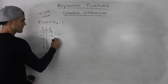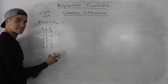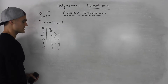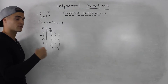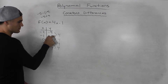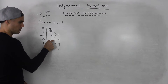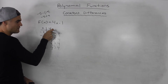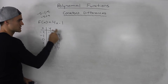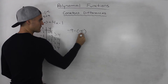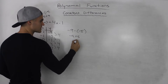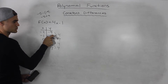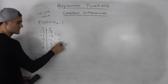Negative 1 minus negative 5 gives us 4. 3 minus negative 1 is 4, and 7 minus 3 is 4 as well. I want to reiterate — and I'll reiterate multiple times because it's a common mistake — you always take the bottom y value and subtract the top y value. A lot of students take a y value and subtract the bottom, which would be wrong. If you took negative 9 and subtracted negative 5, that gives negative 4, which is incorrect.